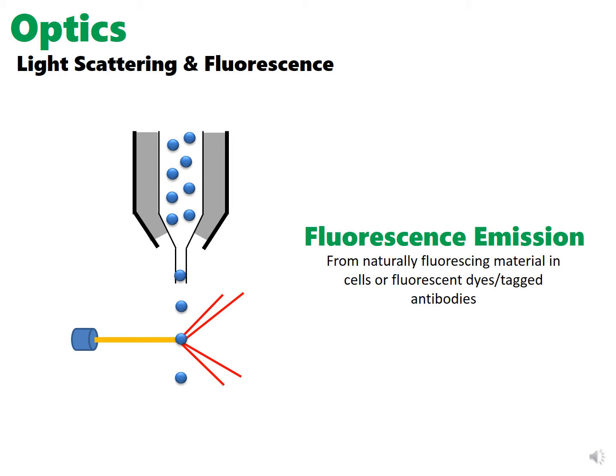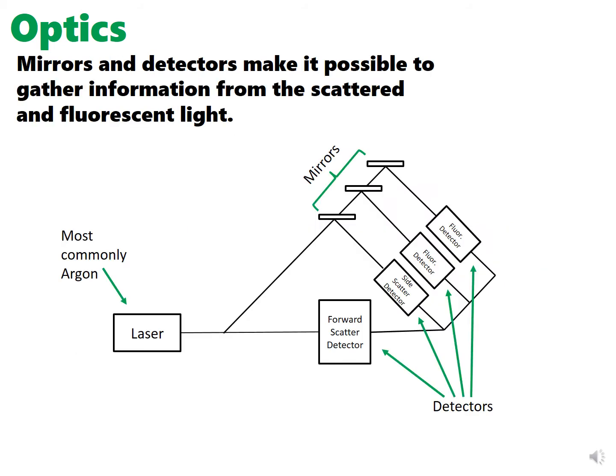Light can also trigger a fluorescence image if a cell is either naturally fluorescent or has been tagged with fluorescent molecules. There are a range of mirrors and detectors that collect this light, convert it to electrical pulses, and then take it to a computer to be analyzed.